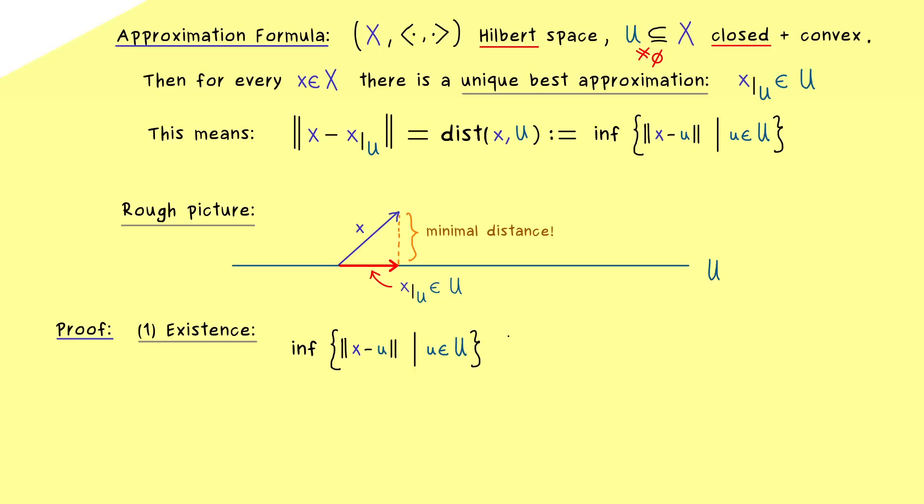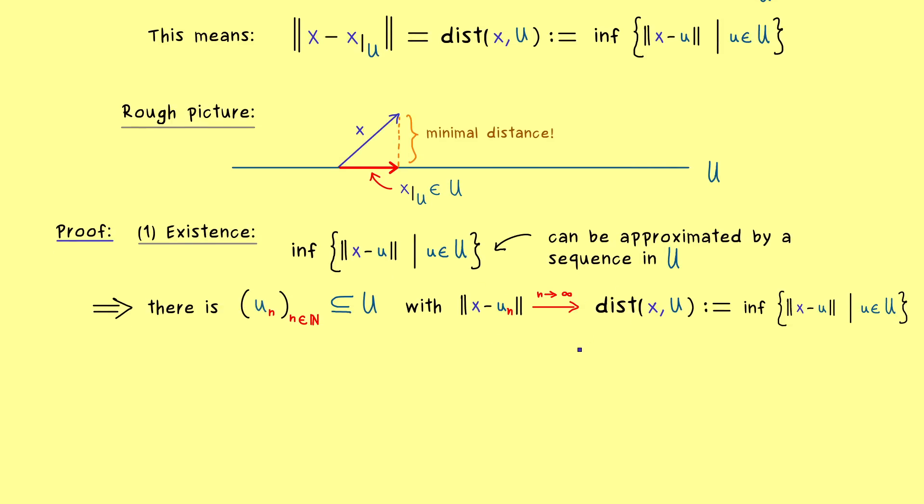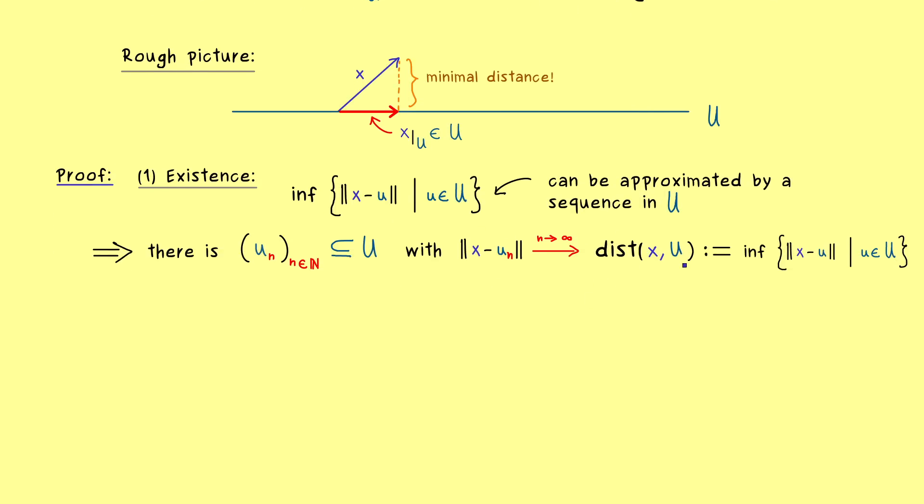Okay but now this implies that the infimum can be approximated by a sequence in U. So this means we can find such a sequence and call it u_n. And now most importantly we don't have to assume that this sequence is convergent at all. We just know that the elements lie completely in U and that the norms here converge to the infimum. Indeed this immediately follows by the definition of the infimum. And here please never forget this infimum is what we call the distance between the vector x and the subset U.